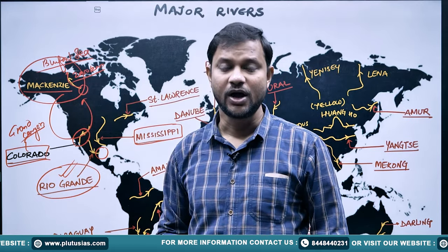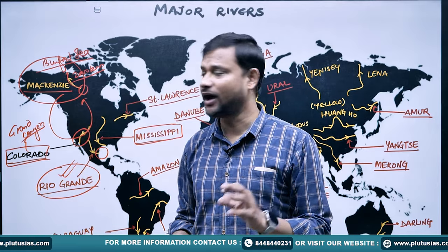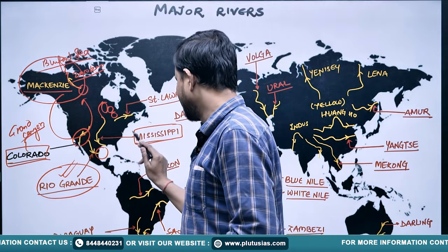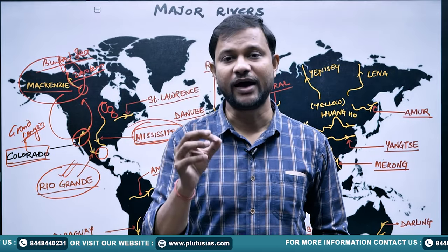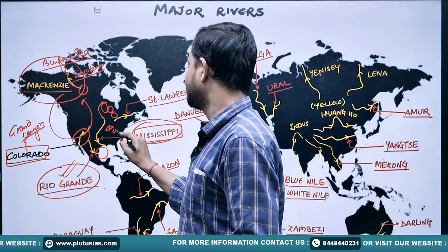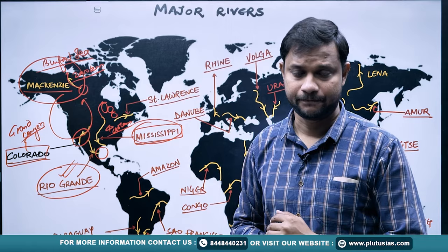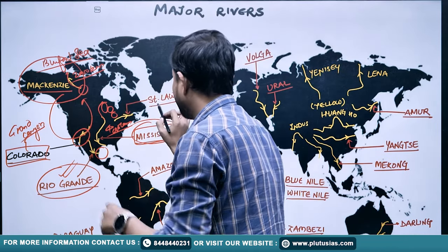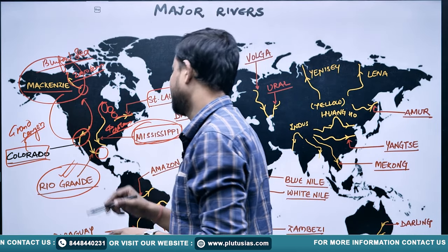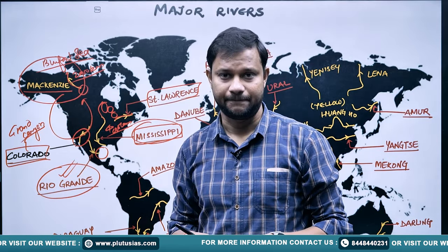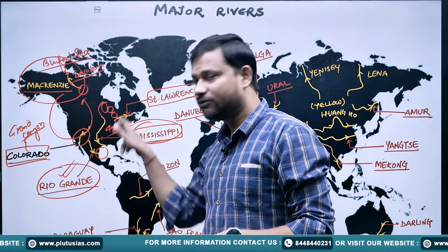Also draining into the Gulf of Mexico is the world-famous Mississippi River, famous for its bird-foot delta. It originates in the vicinity of the Great Lakes region and has a critical length of almost 4,000 kilometers. Next is the Saint Lawrence River, which drains into the North Atlantic in the Canadian part.